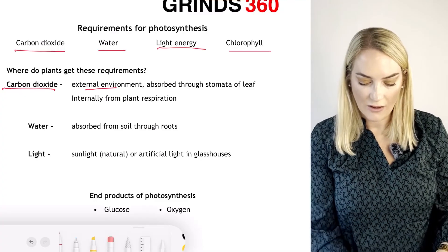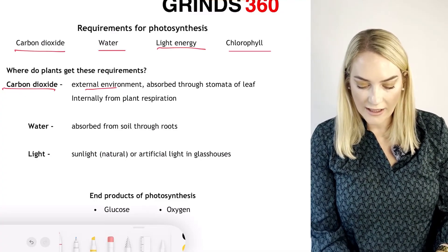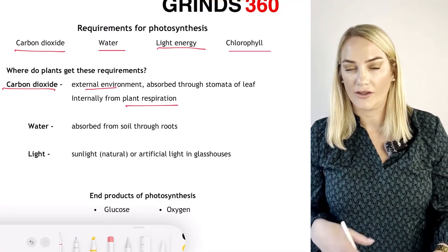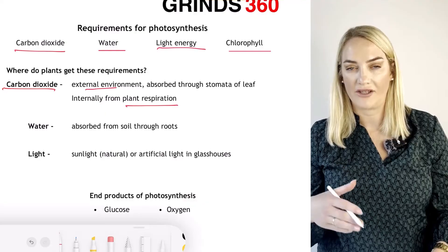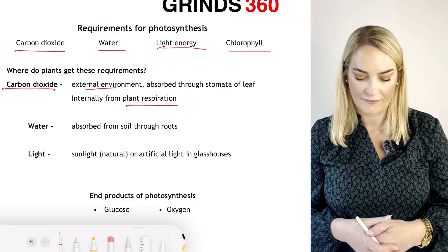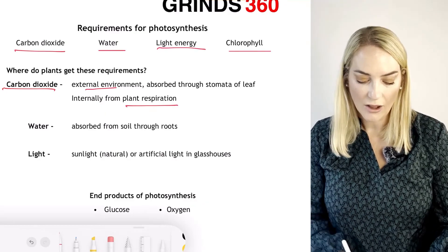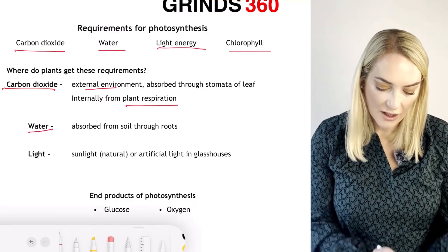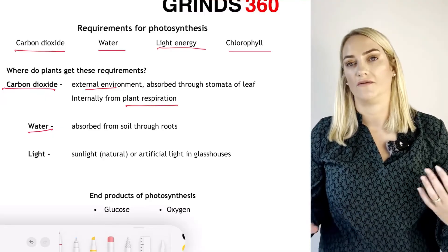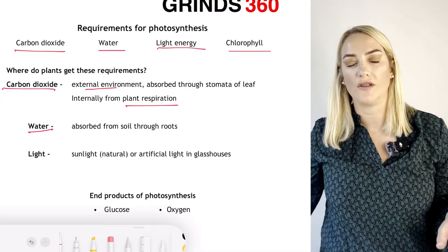Carbon dioxide can be absorbed through the stomata by diffusion into the leaf, or it can be a product of respiration that has occurred within the plant.